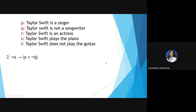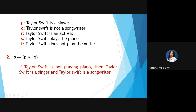Number 2: If NOT S, then P ∧ NOT Q. S: 'Taylor Swift plays the piano,' P: 'Taylor Swift is a singer,' Q: 'Taylor Swift is not a songwriter.' Answer: 'If Taylor Swift is not playing the piano, then Taylor Swift is a singer and Taylor Swift is a songwriter.' We removed the NOT from Q to get its negation, making it a positive statement.